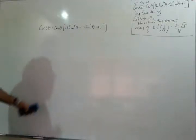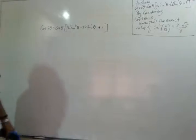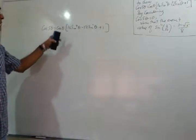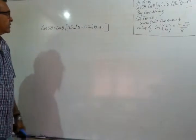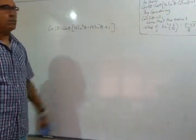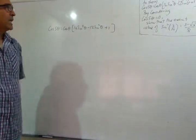We have shown that cos 5θ equals cos θ times this thing in brackets here, 16 sin to the power of 4θ, minus 12 sin squared θ plus 1.